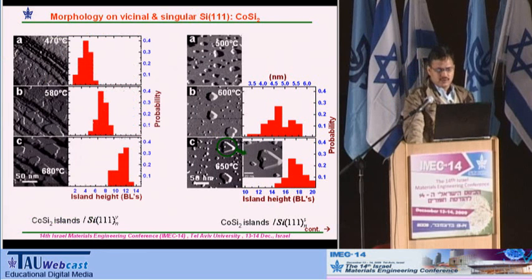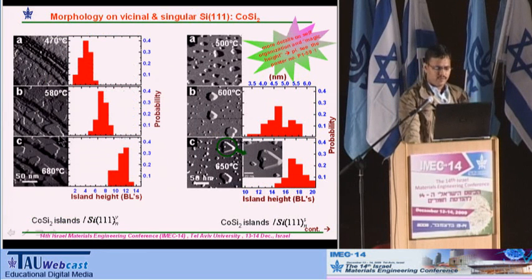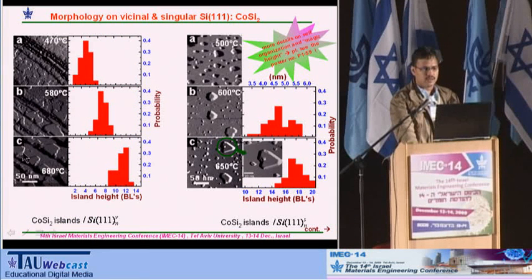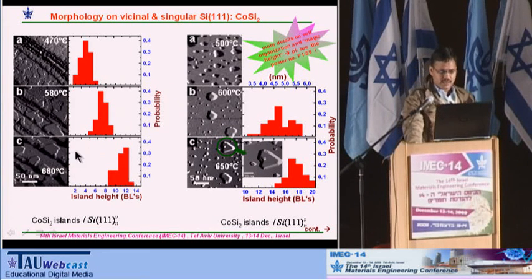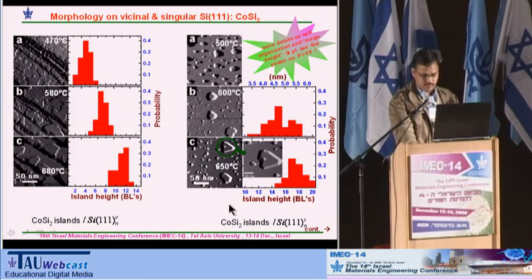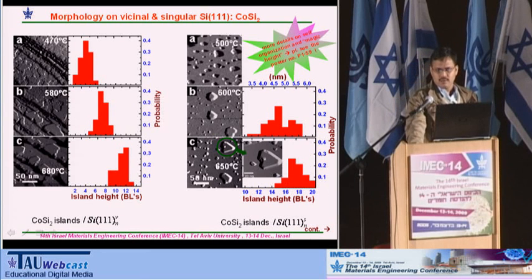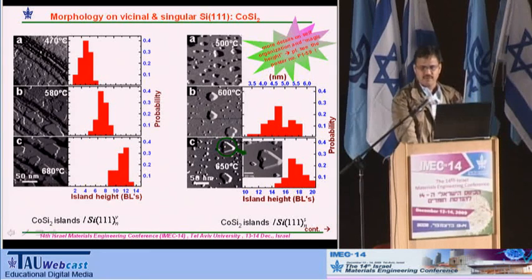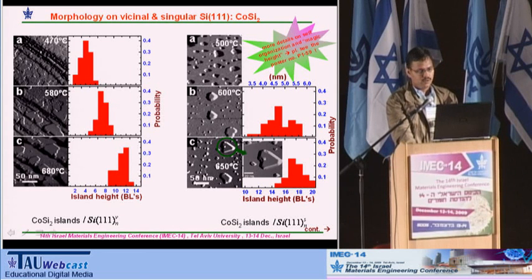The results show different morphology on the vicinal surface compared to the singular surface. On the vicinal surface we have irregular, non-faceted islands, whereas on the singular surface we have compact, faceted islands. However, despite this morphological difference, we observe a preferred height in both cases at each annealing temperature. For more details on self-organization and magic height, please refer to poster E159 by Sibley Manor today.